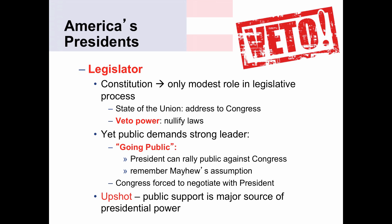Going public is simply when the president tries to use the public to pressure Congress to pass his legislation. Remember Mayhew's assumption: what do members of Congress care about first and foremost? They care about re-election. And so if the public is supportive of the president's agenda, members of Congress—even those of the opposing party—are going to be very reluctant to oppose the president. That role of the public forces Congress to negotiate with the president on legislation.